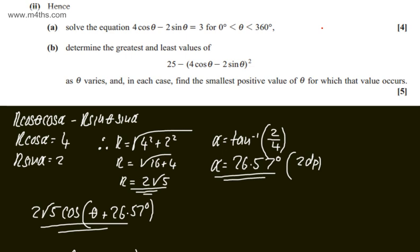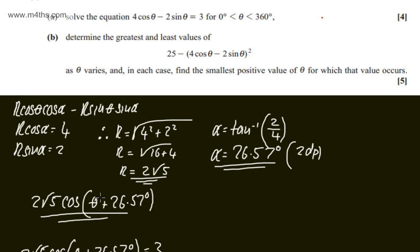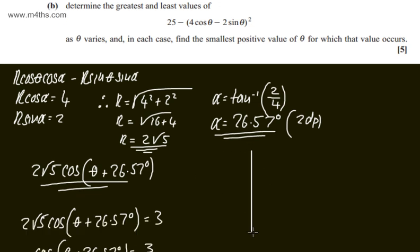We need to find the smallest possible value of θ for which each extreme value occurs. I'll do a sketch of the function 2root5·cos(θ + 26.57°). This function has two transformations on the cosine curve: a stretch of scale factor 2root5 in the y-direction, and a translation of 26.57 degrees in the negative x-direction.